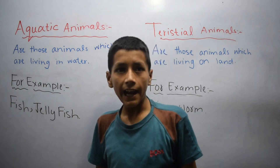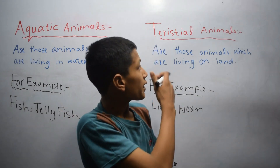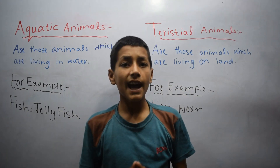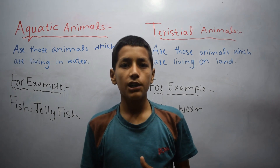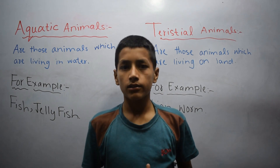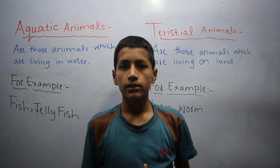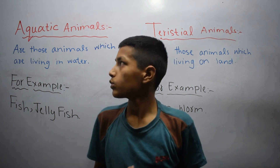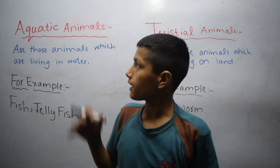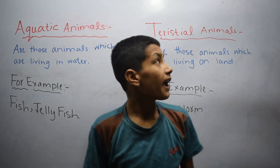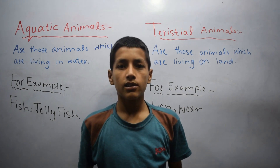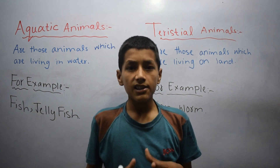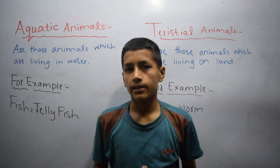Aquatic animals and terrestrial animals are the types of animals which live on earth. In this video I am going to talk about aquatic animals and terrestrial animals. Let's start from the aquatic animals.